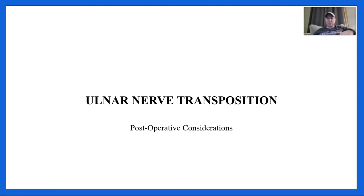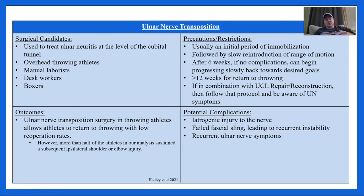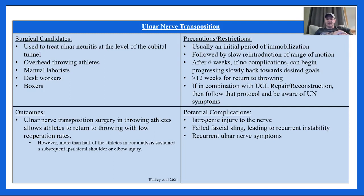While at the medial elbow, we'll talk about ulnar nerve transposition. Surgical candidates include those with ulnar neuritis at the level of the cubital tunnel — overhead throwing athletes, manual laborers, desk workers, and even boxers. Postoperative restrictions include an initial period of immobilization after surgery, followed by slow reintroduction of range of motion. After six weeks with no complications, range of motion is progressed slowly; return to throwing is at 12 weeks. If combined with UCL repair or reconstruction, the slower UCL protocol is followed.